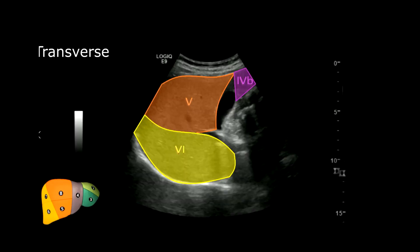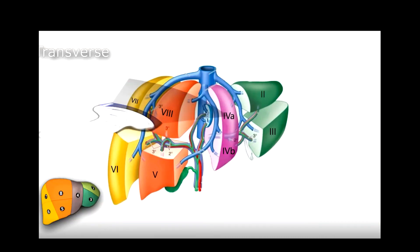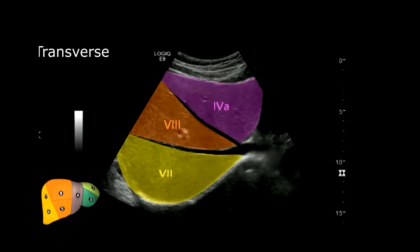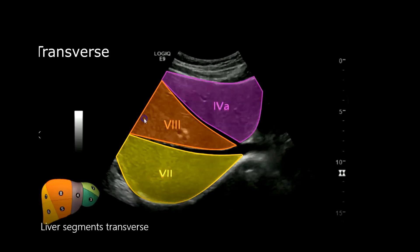Scanning the right lobe of the liver in transverse, we've got the gallbladder, segment 4b, 5, and 6 — so right around this area. Now scanning the superior segment of the right lobe in transverse, you have your hepatic veins visible. Here you have segments 4a, 8, and 7, scanning around right here. You'll see that the middle hepatic vein separates 4a from 8, and the right hepatic vein separates 8 from segment 7.